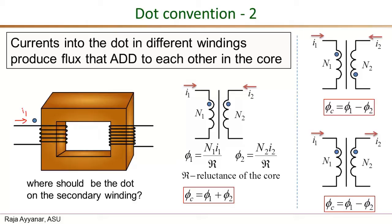Using the right-hand rule, the current in the primary winding flows from left to right, so curling the fingers along the current direction, the thumb points upward. The flux forms a continuous path — it flows upward here, then flows down in this part of the core, and completes the path. The flux direction is clockwise around the core.